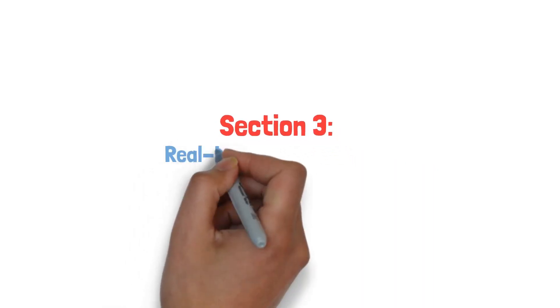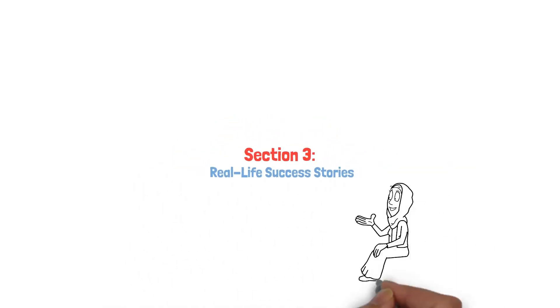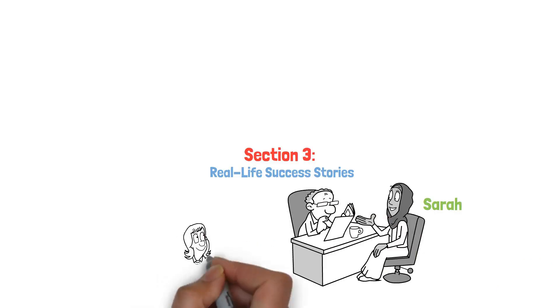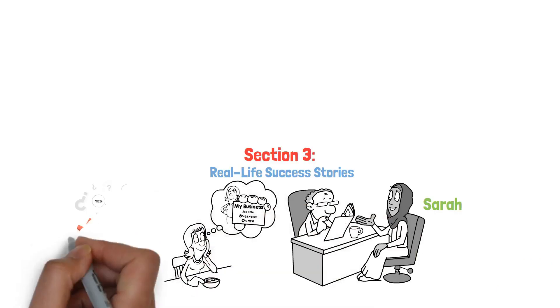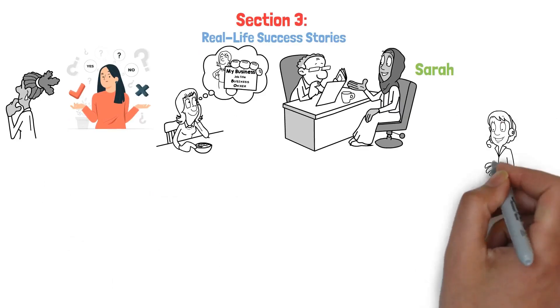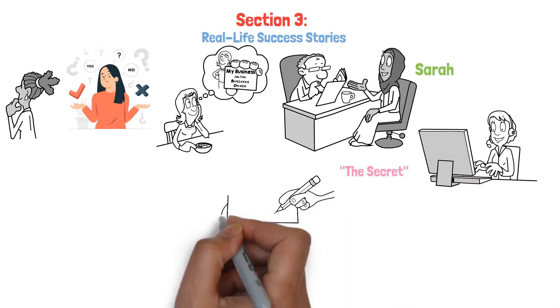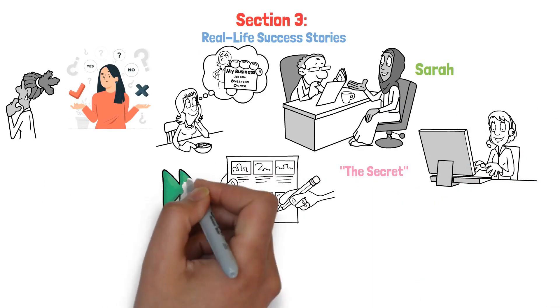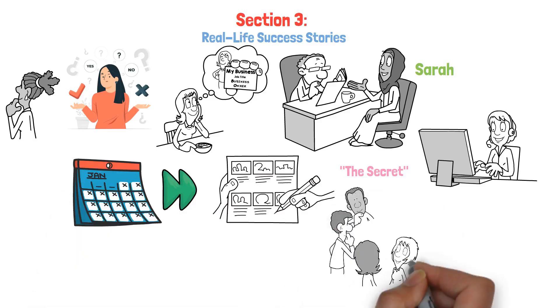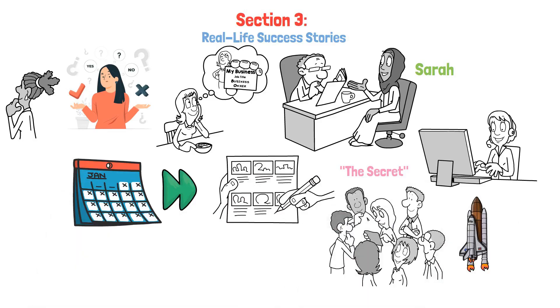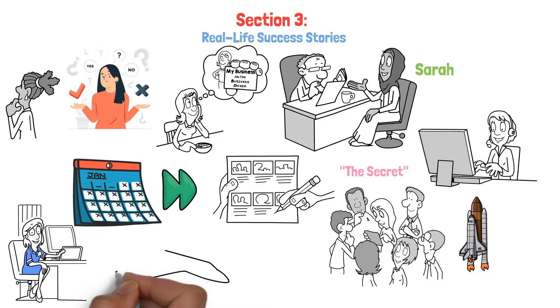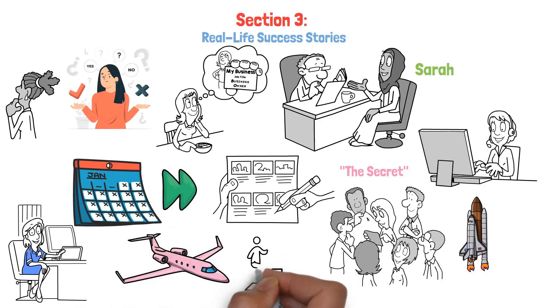Section 3. Real Life Success Stories. Let me introduce you to Sarah. She had a dream of becoming a successful entrepreneur, but self-doubt held her back. That is, until she discovered the secret and started applying its principles. Fast forward a few months, and Sarah's business took off like a rocket. Now she's living her dream, and even has a private jet on her vision board. Talk about aiming high.